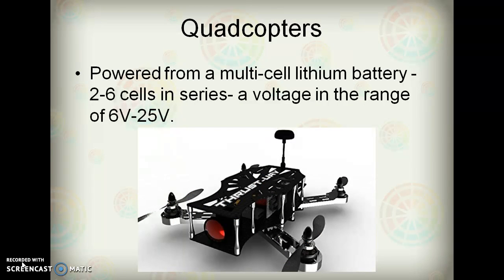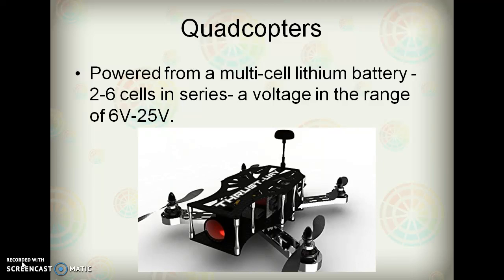Next, quadcopters. Buck converters are used in quadcopters. Quadcopters are often powered from multi-cell lithium battery packs, typically with a configuration of 2 to 6 cells in series. These battery packs produce a voltage in the range of 6V to 25V. A buck converter drops the battery voltage down to 5V or 3.3V for the flight controller to use. The quadcopter industry often calls buck converters BECs — short for battery elimination circuit — or UBECs, universal battery elimination circuits. These BECs and UBECs are often found on the electronic speed controllers that drive the brushless DC motors on the quadcopter, or on a power distribution board which routes the battery power to where it needs to be.